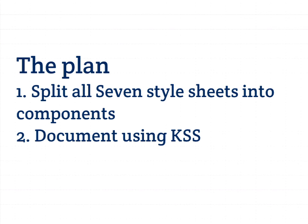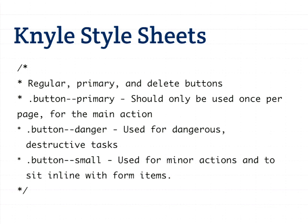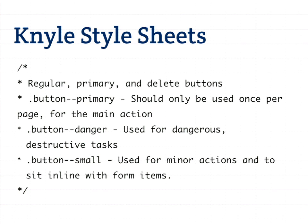We came up with a plan for the Seven theme — basically to take all the styling and split them up into their separate components. We've done that now. The second step was to document all of these files and components using a tool called KSS — Knyle Style Sheets. All you do is put comments in the styling files, describe the different components contained within those files, give advice about how they should be used, and then this tool reads these comments and creates a style guide out of it. This is a basic example of how it can look — it's kind of a proof of concept, but we still need to put all the comments into Drupal's style sheets.